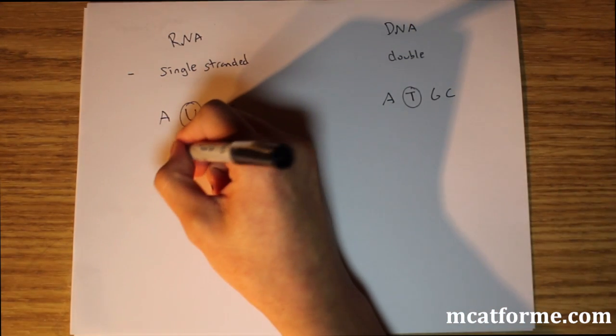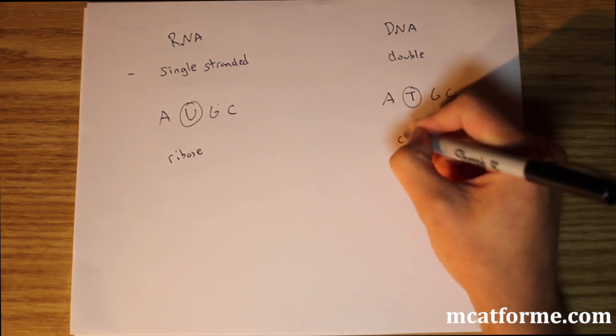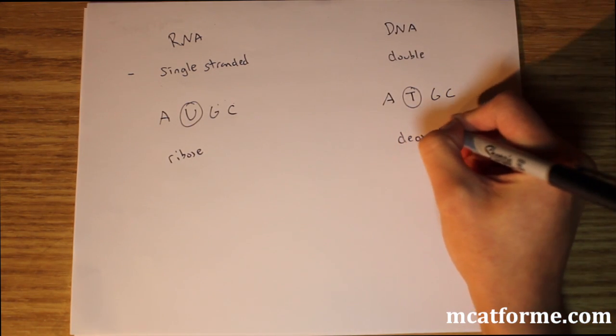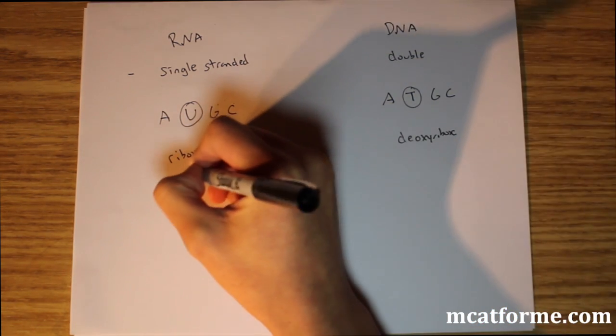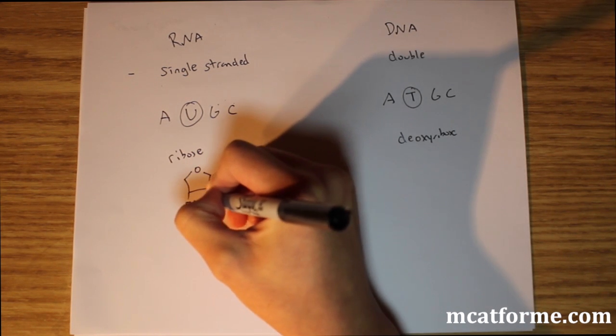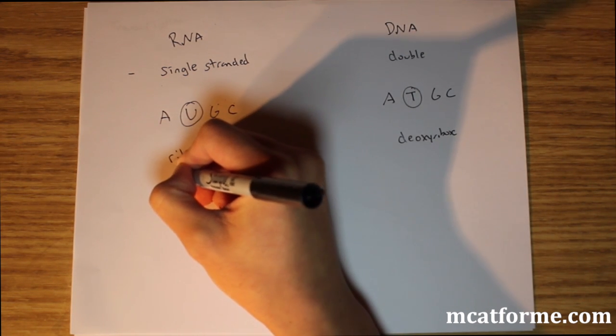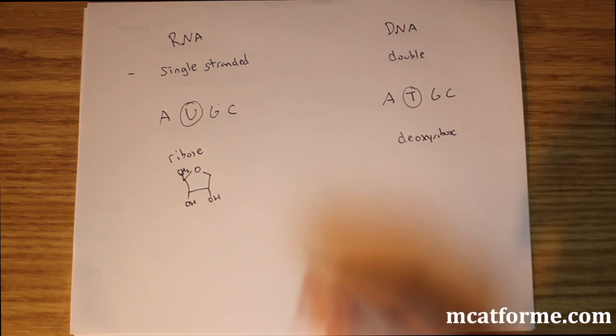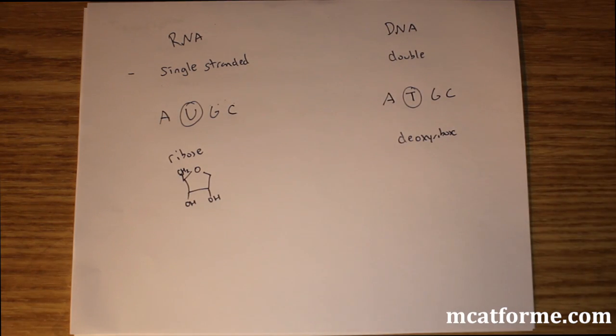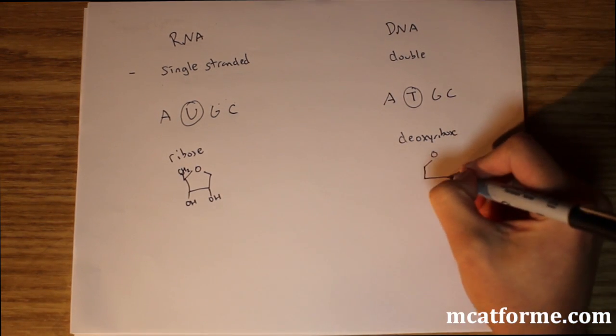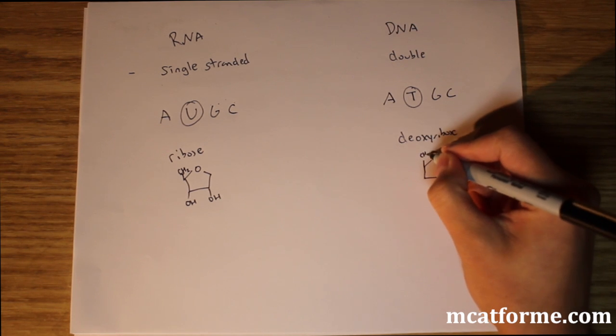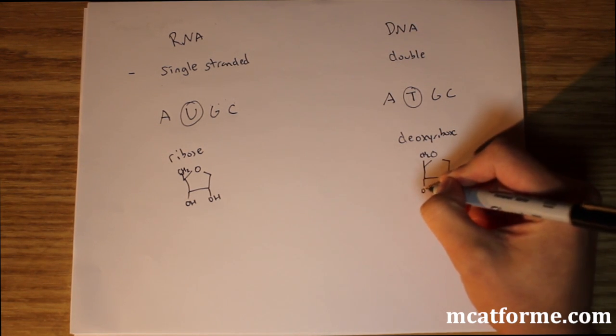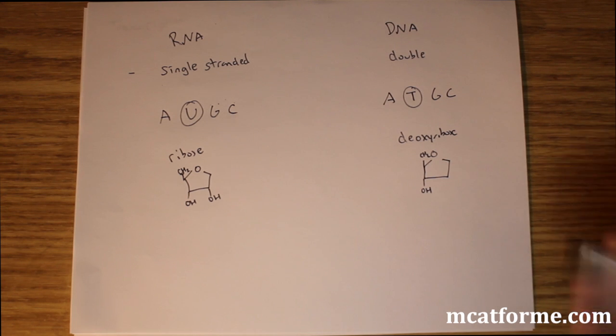The next thing we're going to look at is ribose versus deoxyribose. So what does that mean? Remember ribose looks something like this. Then we had our little CH2 group right here and our bases, but that's not exactly ribose. That's adding stuff onto it. Deoxyribose looks something like this. And this is the sugar backbone. So deoxyribose lost one of the hydroxy groups.